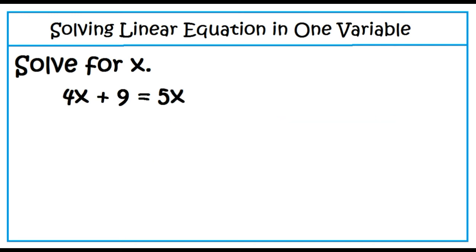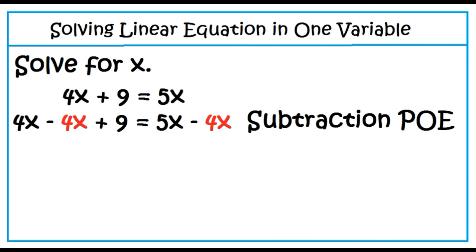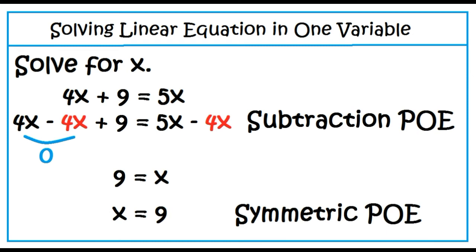What if the variables are found on both sides of the equation? Solve for x: 4x plus 9 equals 5x. Eliminate one of the terms with a variable factor — it's wise to eliminate the term with the smaller numerical coefficient. Subtract 4x from both sides. 4x minus 4x is 0, and 5x minus 4x is x. By the symmetric property of equality, 9 equals x can be written as x equals 9.